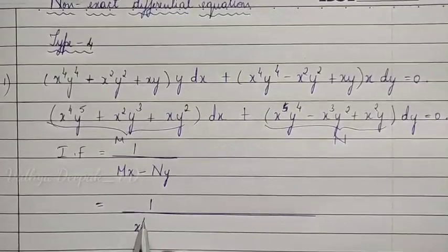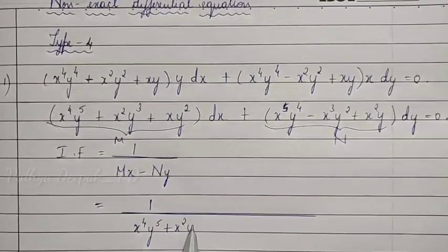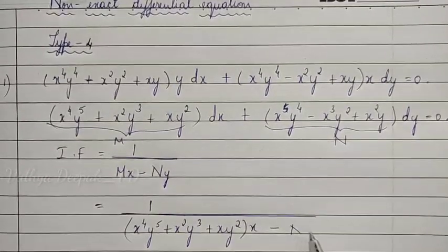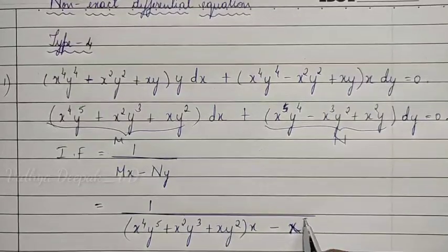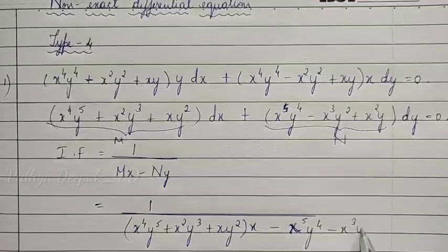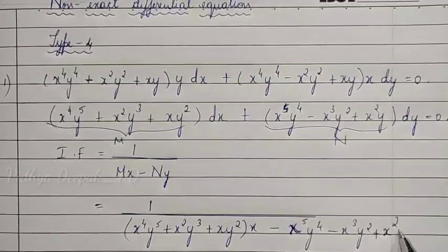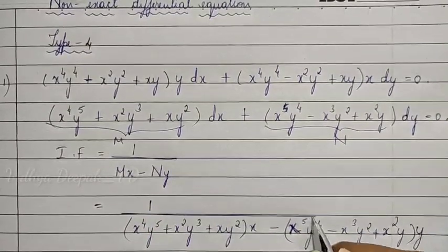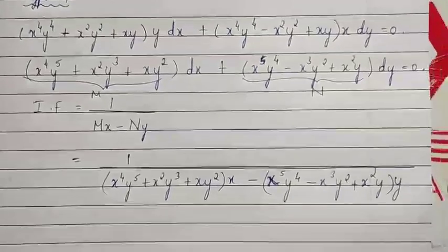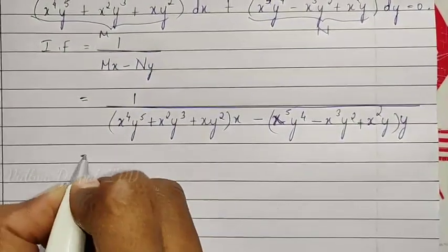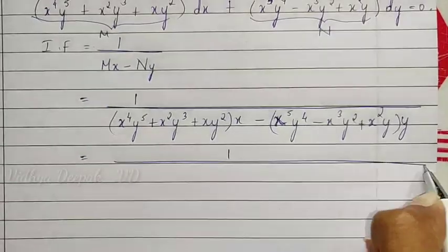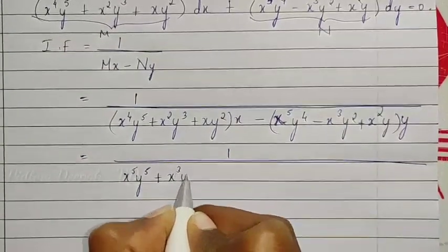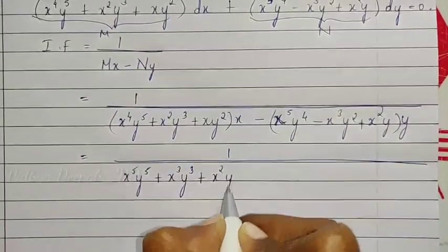We have M = x⁴y⁵ + x²y³ + xy² into x, minus N = x⁵y⁴ − x³y² + x²y into y. So we will simplify this: multiply x inside to get x⁵y⁵ + x³y³ + x²y².